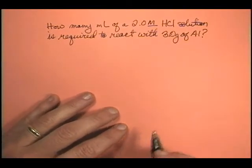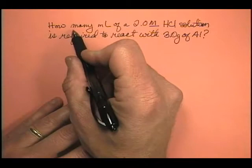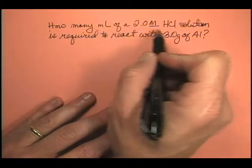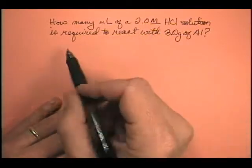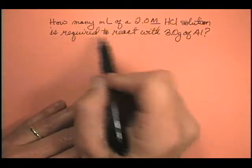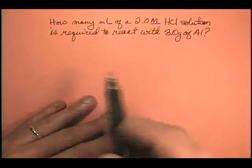All right, let's do some more solutions. How many milliliters of a 2.0 molar HCl solution, remember that's molar, like your tooth, is required to react with 3.0 grams of aluminum?